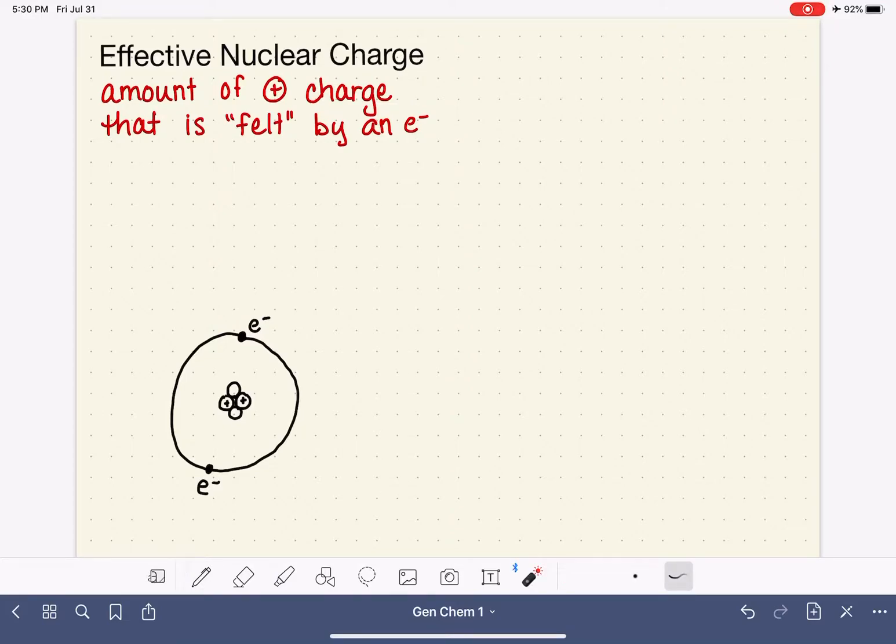The effective nuclear charge is a measure from the perspective of an electron. So let's say this electron right here. It is a measure of how much positive charge this electron can actually detect. So even though there are two protons in the nucleus of this atom, this electron may not detect or feel a positive charge that is equivalent to two protons. Because there is some distance between the nucleus and the electrons, the positive charge is a little bit weakened or watered down just as a result of that distance. So these electrons are going to feel a little bit less than a full-on two-proton positive charge.